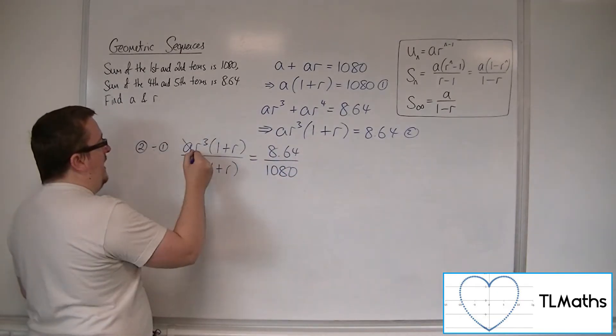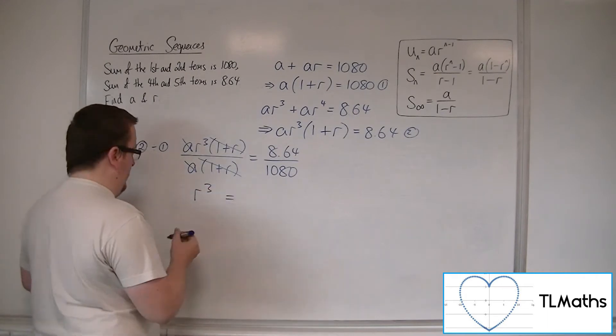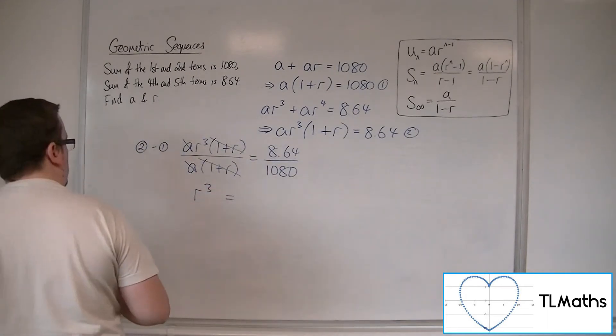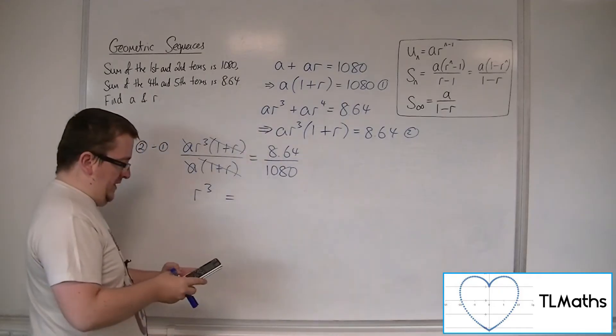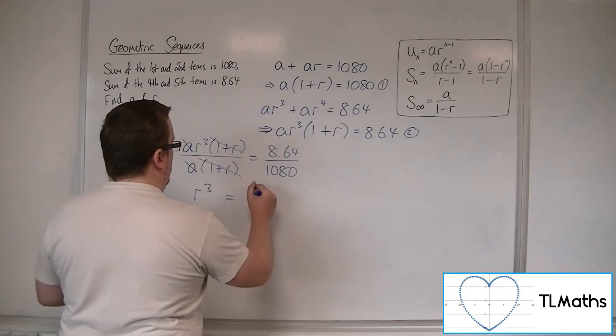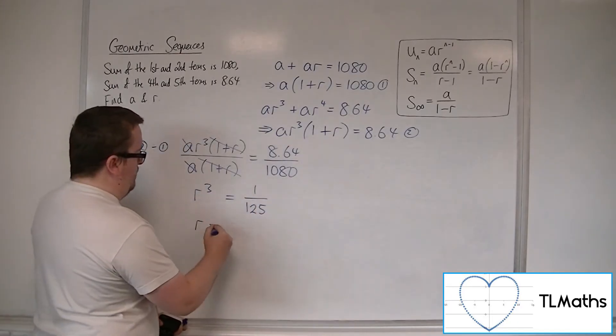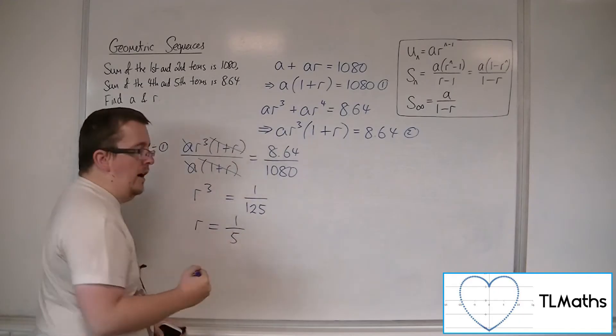Here the A's can cancel. The 1 plus R's can cancel, leaving R cubed on the left-hand side. The 8.64 divided by 1080 is 1 over 125. So when you cube root both sides, you'll get R as 1 fifth.